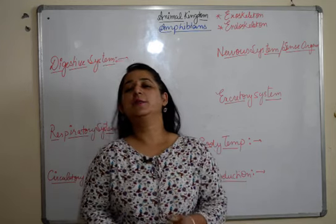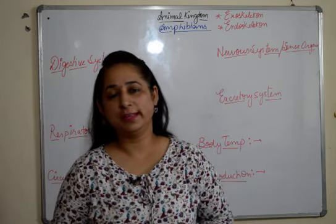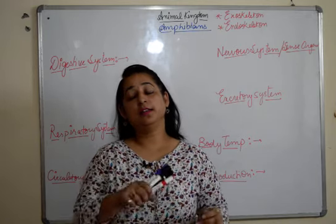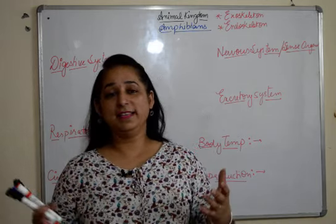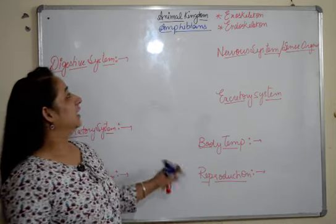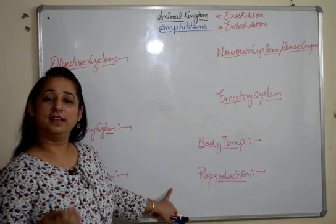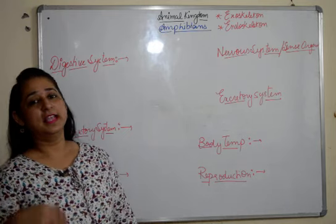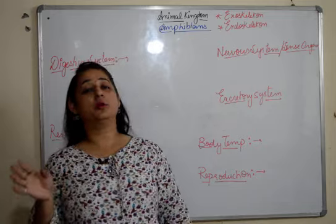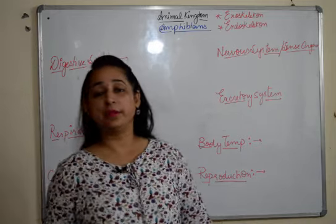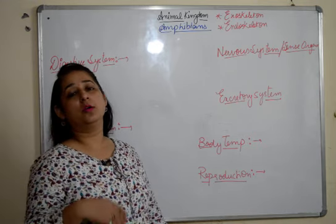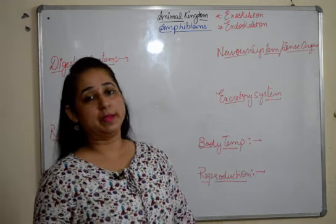Hello everyone. This video is in continuation to our grade 11 videos where we are talking about animal kingdom. We have done almost many phyla under animal kingdom and have discussed till amphibians. In this video, we will start with amphibians and talk about their general characteristics and different systems. In our next video, I will take up examples of amphibians.